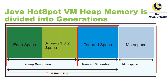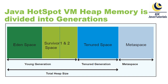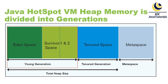Prior to Java 8, there was PermGen memory instead of metaspace. Now let's look at each generation. The young generation consists of one Eden space and two survivor spaces. The JVM initially assigns all objects to Eden space, and most objects die there. When the JVM performs a minor garbage collection, it moves any remaining objects from Eden space to one of the survivor spaces.